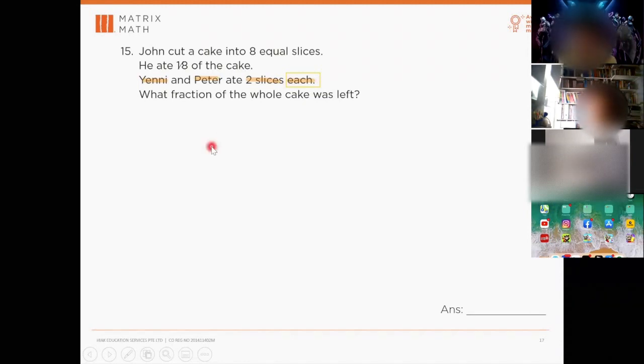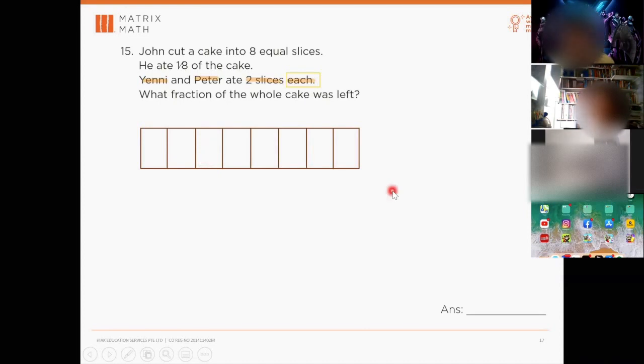So John cut a cake into eight equal slices, so you will cut it into eight equal parts. He ate one over eight of the whole cake. So out of eight pieces, John will eat one piece because one over eight.